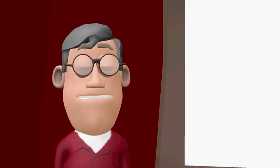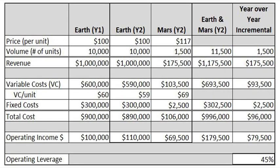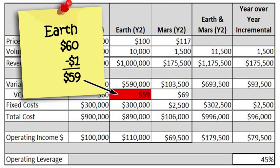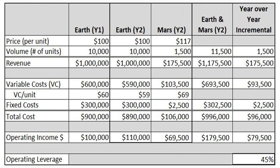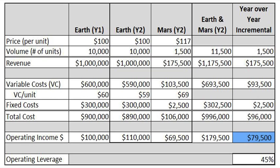How does this cost per unit reduction affect operating leverage? This cost reduction decreases the Earth variable cost per unit from $60 per unit to $59 per unit, and $70 per unit to $69 per unit for products sold on Mars. Note this reduction does not impact the additional $10 freight charge for Mars reflected in the cost of $69 per unit. The $1 per unit change results in an overall variable cost improvement of $11,500, reducing incremental variable cost to $93,500, and total cost to $96,000, while increasing our operating income dollars to $79,500. This combination improves our operating leverage and meets our target of 45%, maximizing the value of our solution.